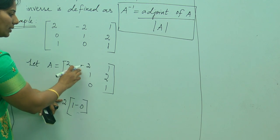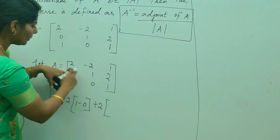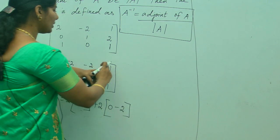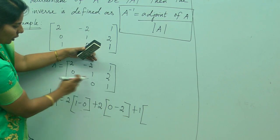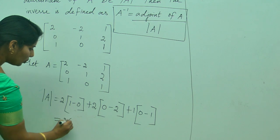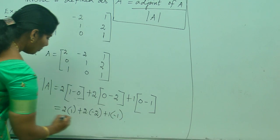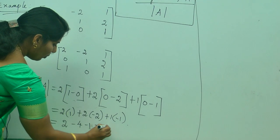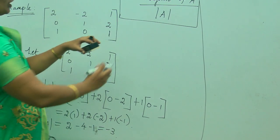Already we have a minus sign here, so minus into minus gives plus. Plus 2 into — leave the corresponding row and column — 0 into 1 minus 2 into 1, giving 0 minus 2. Then plus 1 into — leave corresponding row and column — giving 0 minus 1. So the determinant is 2 into 1 plus 2 into minus 2 plus 1 into minus 1, which gives 2 minus 4 minus 1, equals minus 3. Therefore, determinant of A equals minus 3.